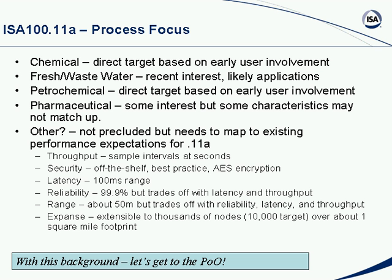The performance expectations for DOT 11A, based on current thinking in the committee: throughput will support sample intervals on the order of seconds; security will be best-practice off-the-shelf incorporating AES — American Encryption Standard — encryption; latency will be on the order of 100 milliseconds; reliability will be what's called three nines. We see a range of about 50 meters, but you may trade that off with reliability, latency, and throughput depending on how you configure your network. We expect DOT 11A to cover thousands of nodes — up to about 10,000 nodes — over about one square mile footprint.